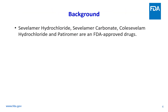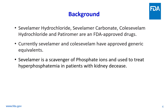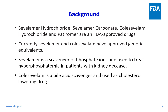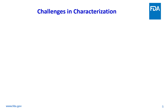To give a little background about these three molecules: all three examples are FDA-approved drugs. Currently, sevelamer and Colesevelam have approved generic equivalents. Sevelamer is approved as a carbonate salt and hydrochloride salt for treating hyperphosphatemia. Colesevelam hydrochloride is approved as a cholesterol-lowering agent. Patiromer is a scavenger of potassium and is used to lower blood potassium levels.